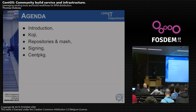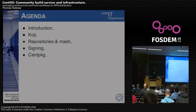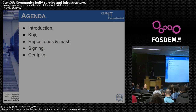The agenda is as follows. We'll start with quick introductions and I'll present Koji, which we use for the build system. I'll present how we do repositories. I'll speak about signing — it's not completely there yet, but we are working on it and it should be ready in a few weeks. And finally, Brian will talk about CentPkg.